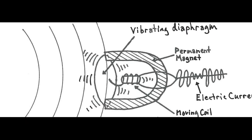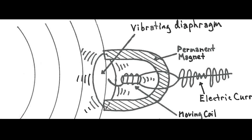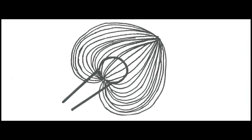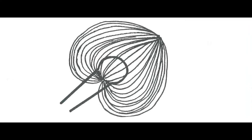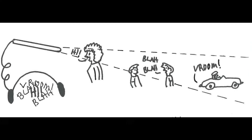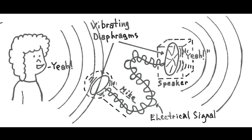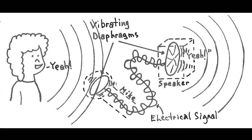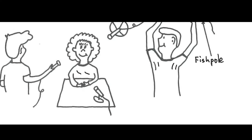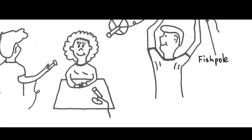Frequency is measured in hertz, and the average person can hear between 16 and 16,000 hertz, although that range shrinks as we age. The size of sound waves is called amplitude, which affects the volume. Amplitude is measured in decibels, and the larger the wave, the higher the decibel. When sound waves reach us, our eardrum vibrates in response. Every microphone has its own eardrum, if you will, called the diaphragm.